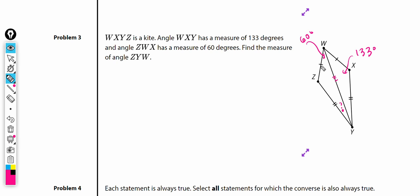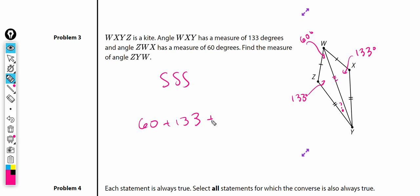Just like before, we can see SSS is congruent to SSS, so we know the two triangles are congruent. If the corresponding parts are congruent, and this angle is 133 degrees, the corresponding angle is also 133 degrees. The whole angle ZWX is 60 degrees — we need to go back and correct: ZWX is the full angle at 60 degrees.